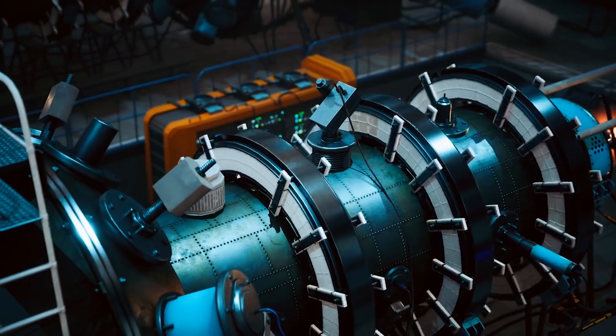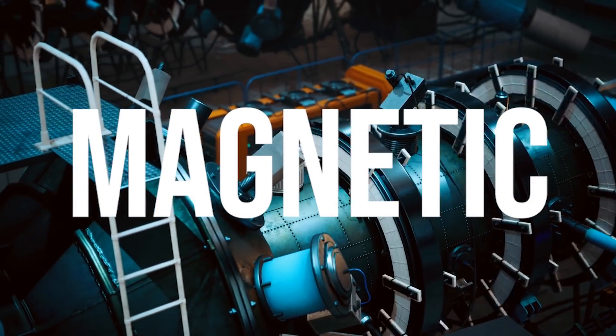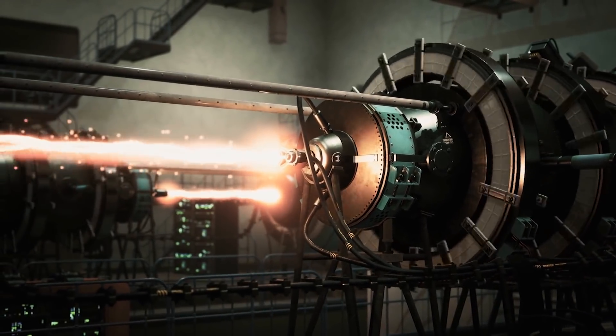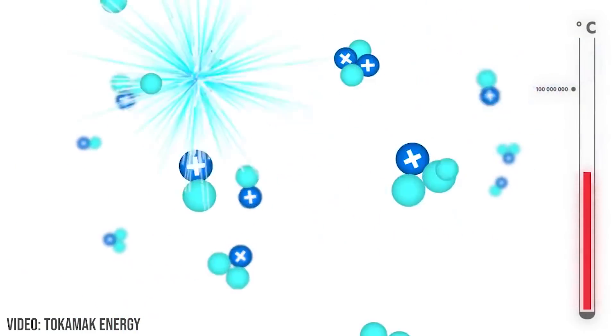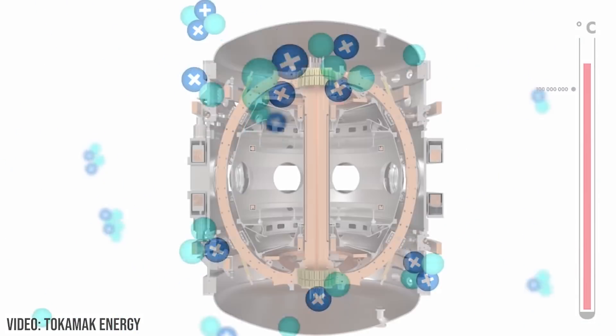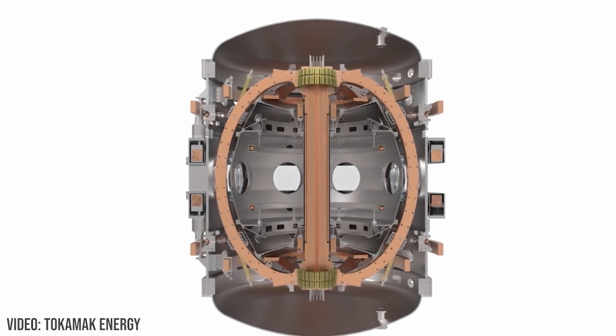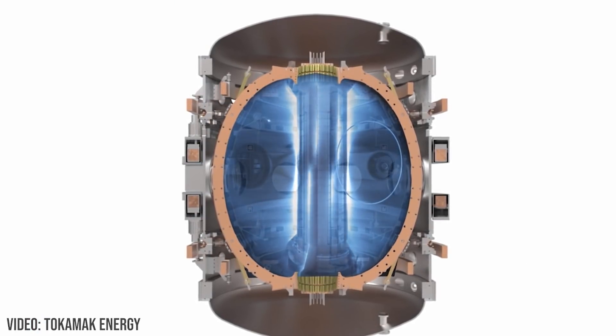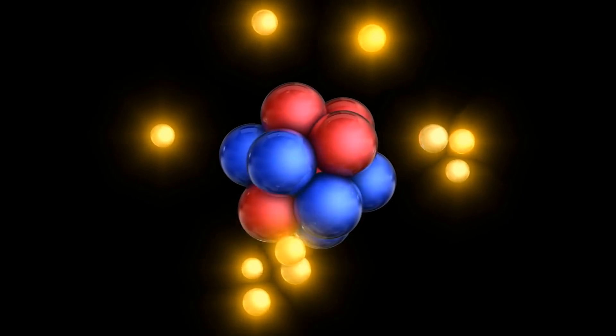The types of reactors are often broken down into magnetic confinement and inertial confinement. Inertial confinement shoots a piece of fuel with a laser, heating it up enough for nuclear fusion to take place. Magnetic confinement, on the other hand, uses electromagnets to keep a magnetic plasma inside a chamber where it is heated enough for fusion.